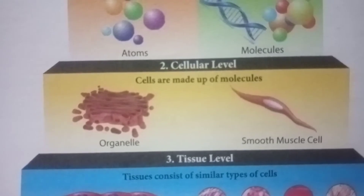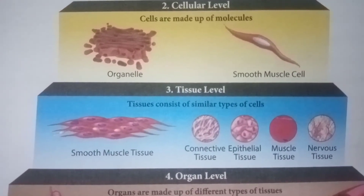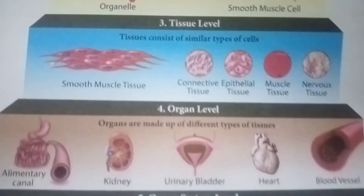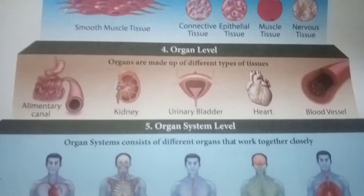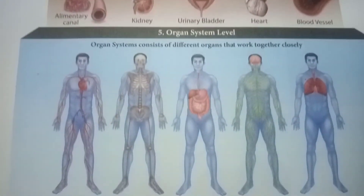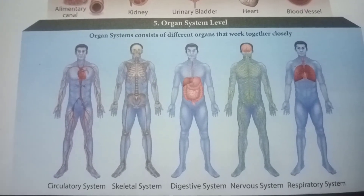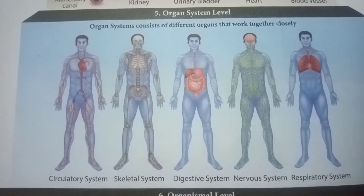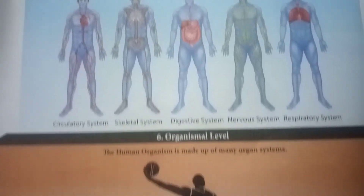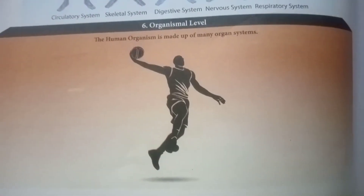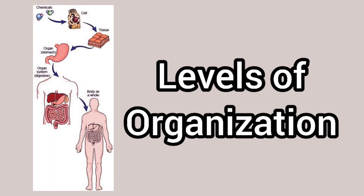Cells combine to form tissue, and tissue forms an organ — that is, kidneys, heart, lungs. Organs together form an organ system level. For example, bones form the skeletal system, and digestive organs form the digestive system. The organ system then forms an organism. In order, we call these the levels of organization.